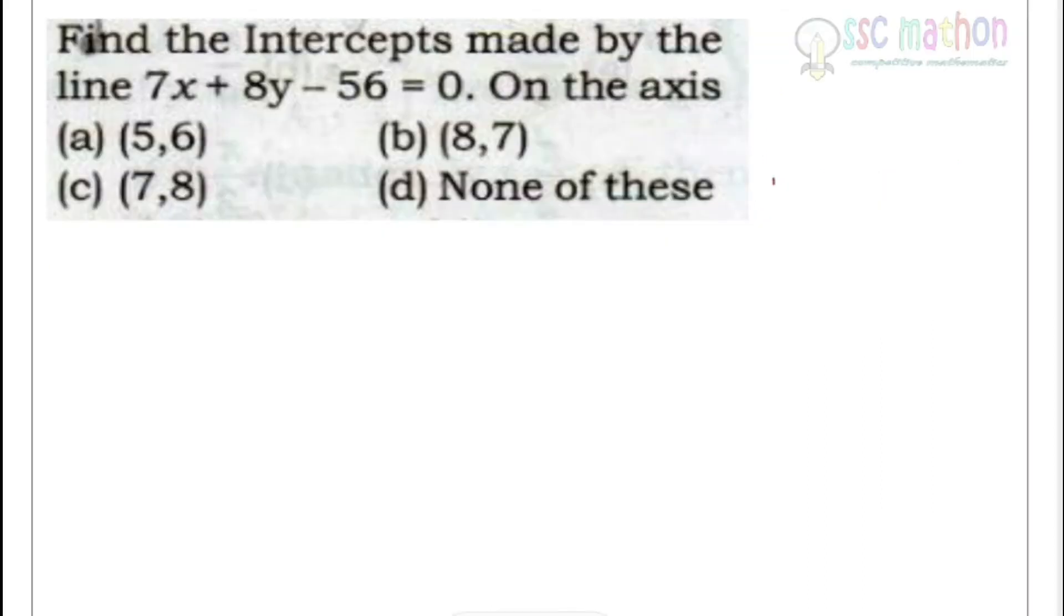Hello students, welcome to SSC Method. Find the intercepts made by the line 7x + 8y - 56 = 0 on the axis. We know that if we change it to the format x/a + y/b = 1, then the intercept form is (a, 0) and (0, b).